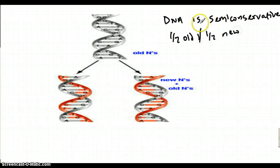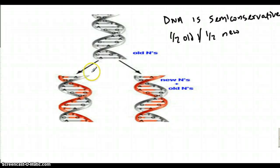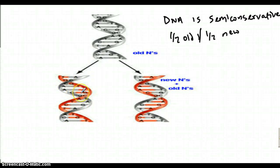If we look at the image, the original DNA is gray. In the two new DNA molecules that we form, we have half gray and half red — so it's half old and half new. That is a simple concept.